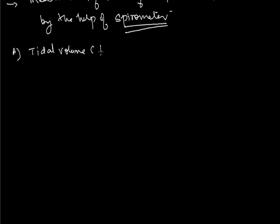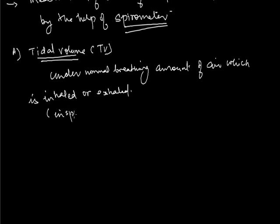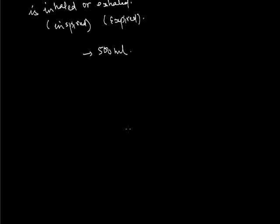The first volume is Tidal Volume — the air which is inspired or expired during normal breathing. In normal breathing conditions, the amount of air a person inhales and exhales is approximately 500 ml. So during normal breathing, a person takes in and expels 500 ml of air.